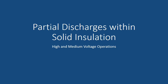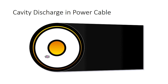Solid insulation with impurities and air-filled gap cavities can be found in solid insulation of medium and high voltage generators, motors, and power cables. Insulation defects are a result of manufacturing, handling, and other faulty processes. Under power cable operations, cavities experience localized electrical stress — partial discharges.